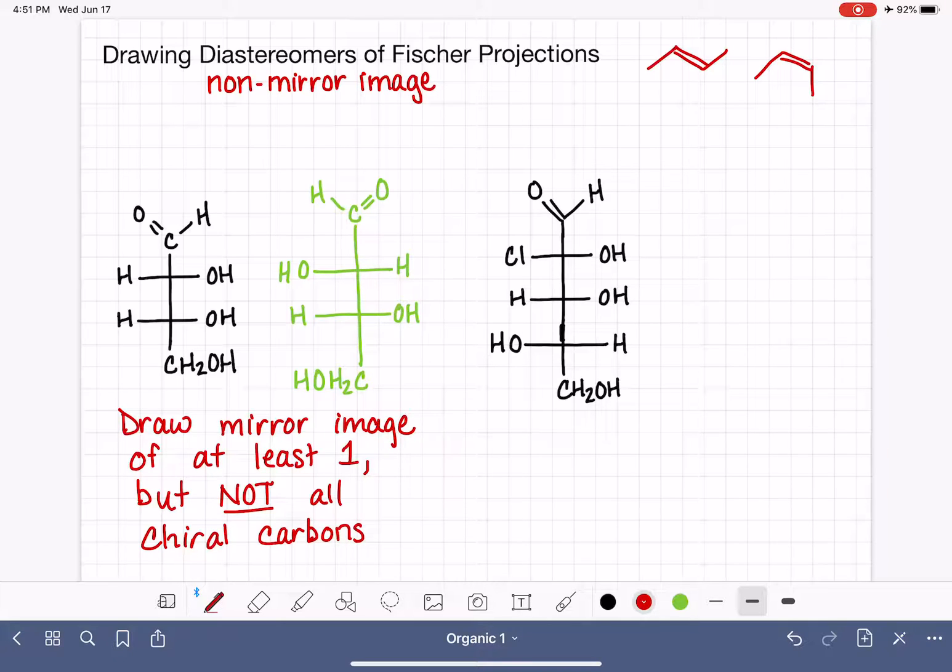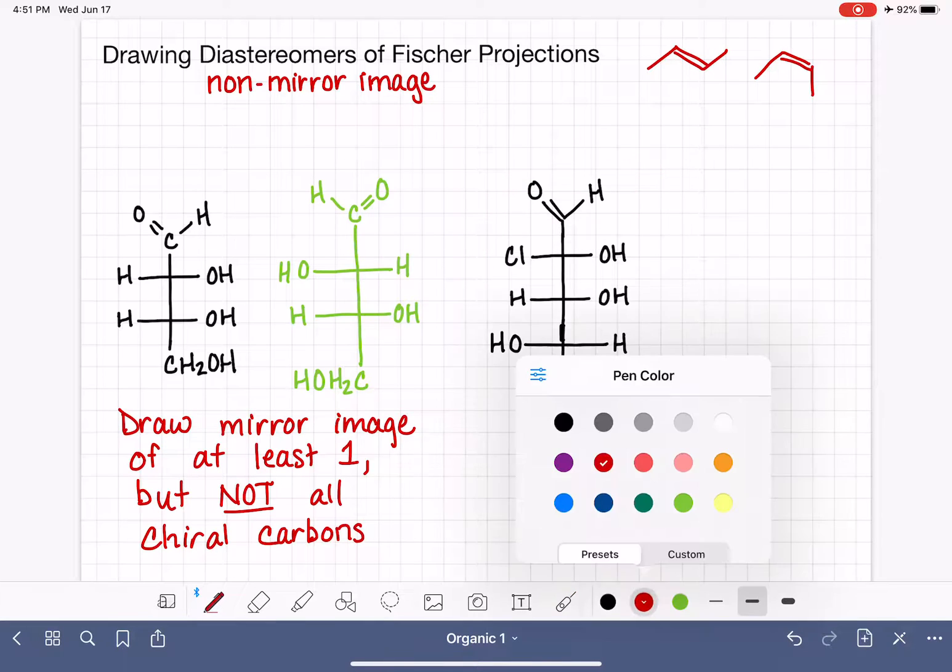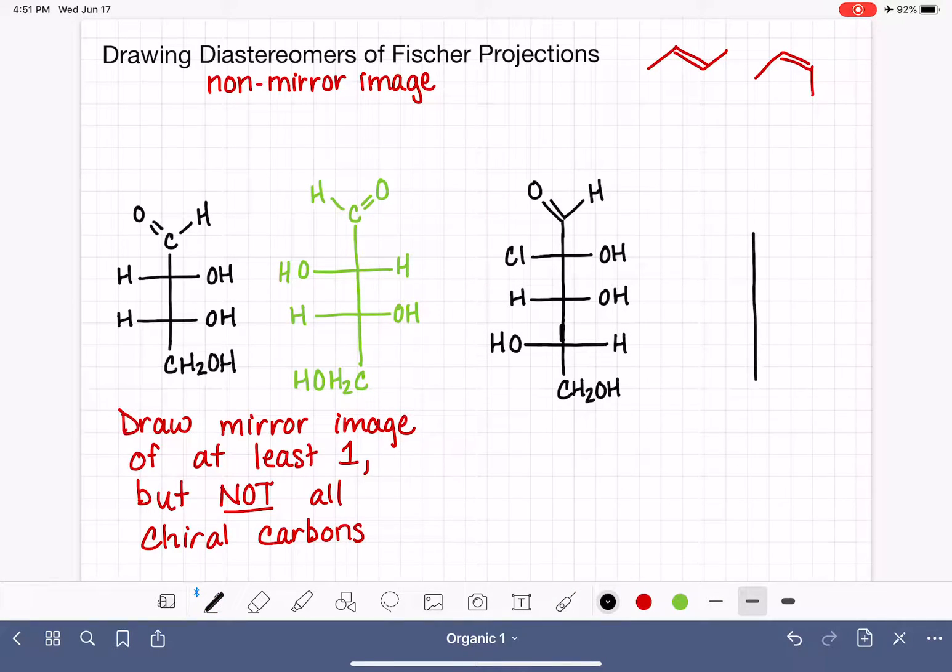And when I first talked about diastereomers and I was drawing diastereomers, I showed you that there are usually a lot of diastereomers. So if somebody asks you to draw the diastereomer of a molecule, there's usually multiple correct answers. I chose to draw it in this particular way, but I just as easily could have kept this chiral carbon alone, left it alone, and reversed the stereochemistry of the one below. So there's two different diastereomers for this molecule. So when we work on this example over here, because this one has three chiral carbons, that means that we have even more diastereomers, even more correct answers to the question, draw a diastereomer.